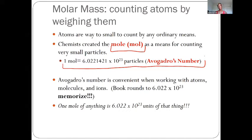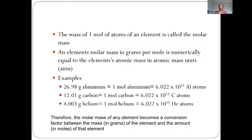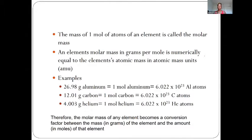The relationship between the mass and the mole is where we develop what's called the molar mass. The mass of one mole of atoms of every element is called the molar mass. So one mole of something equal to its atomic mass represents the molar mass. An element's molar mass in grams per mole is numerically equal to the element's atomic mass in atomic mass units.